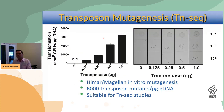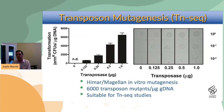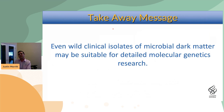Finally, we tested transposon mutagenesis in our clinical isolate with an eye toward eventually doing TN-seq. Using in vitro transposon mutagenesis with the HIMAR Magellan system, we can achieve 6,000 transposon mutants per microgram of genomic DNA — a level of mutagenesis already directly suitable for TN-seq analysis. The takeaway is that even wild clinical isolates of microbial dark matter may be suitable for detailed molecular genetics research.